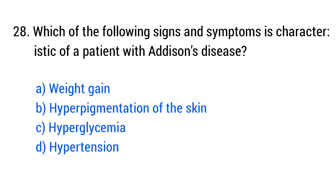Question number 28. Which of the following signs and symptoms is characteristic of a patient with Addison's disease? The right answer is option B: Hyperpigmentation of the skin.